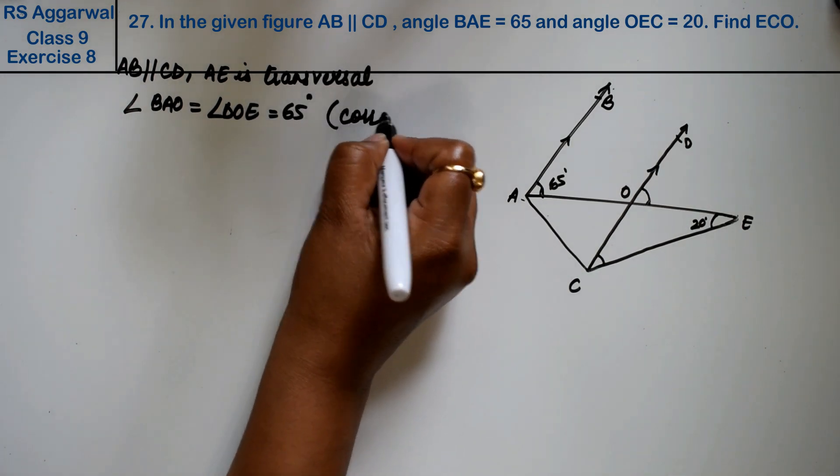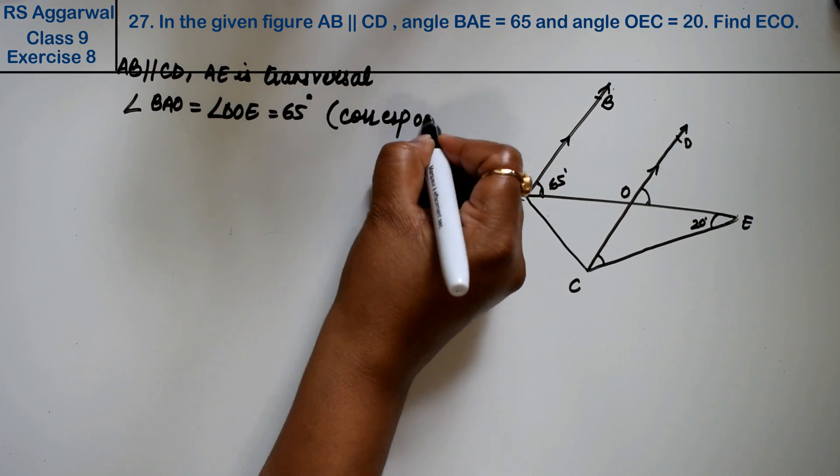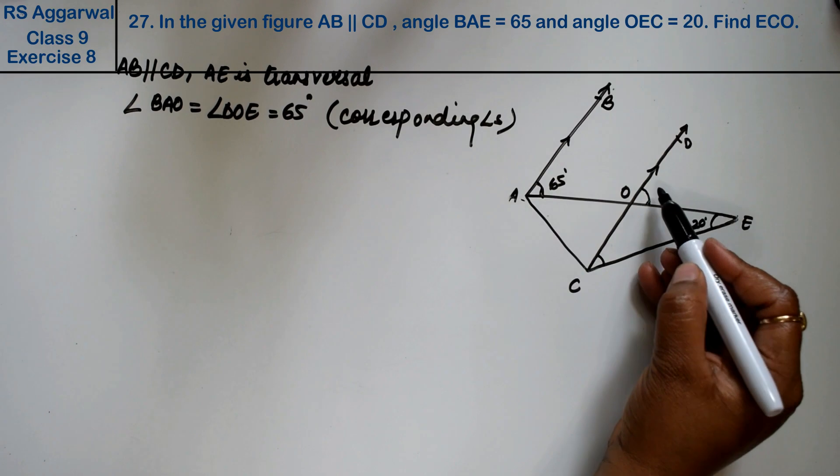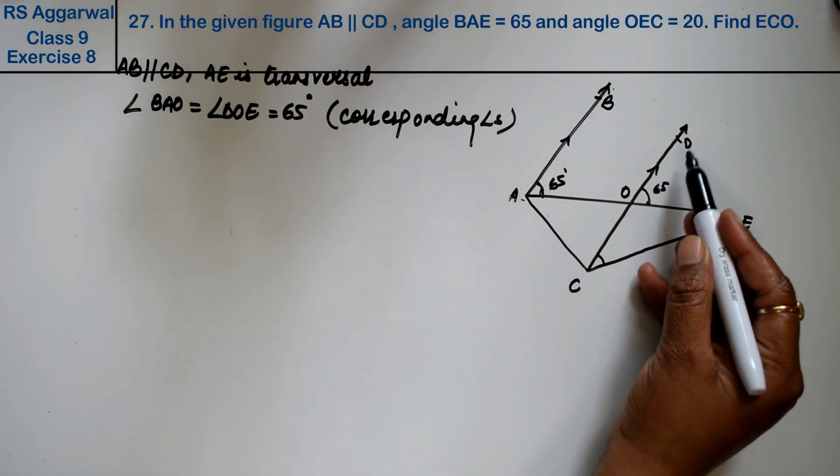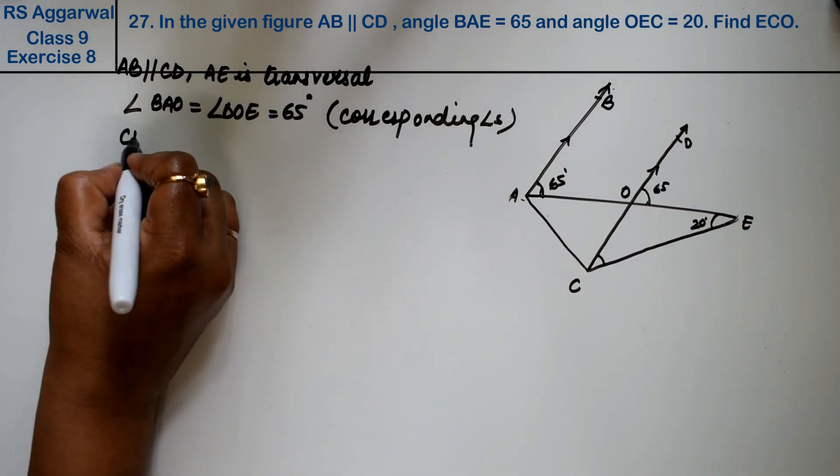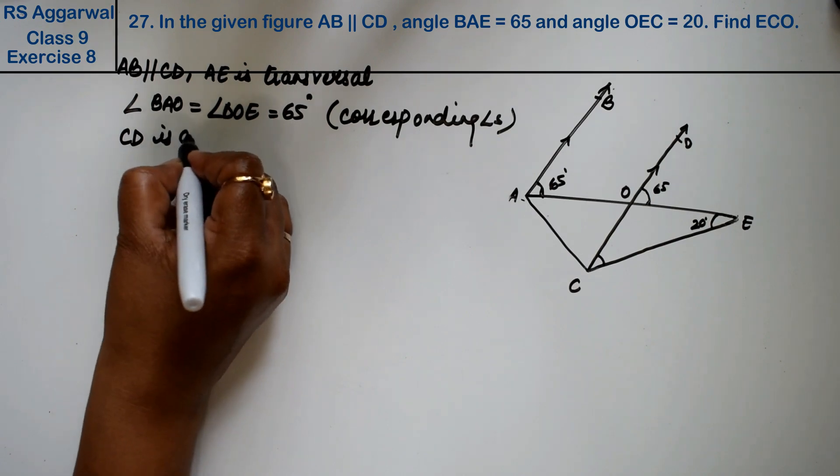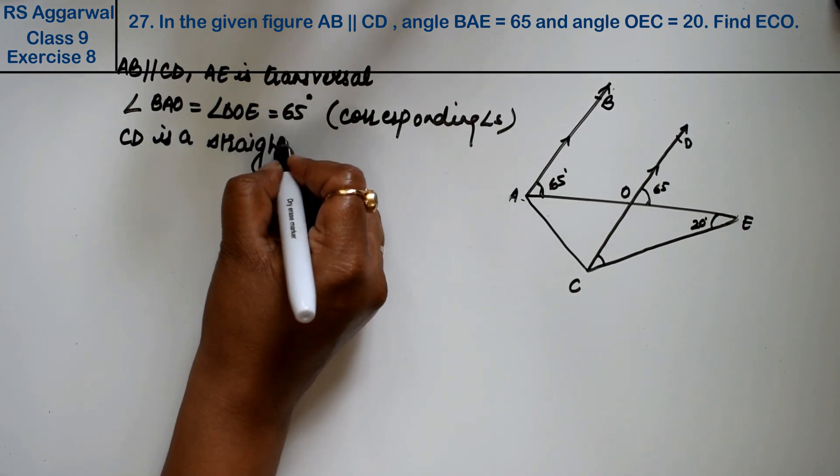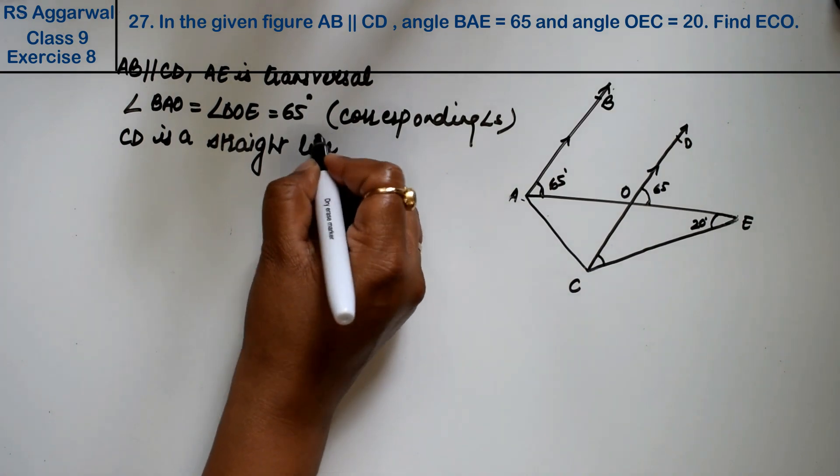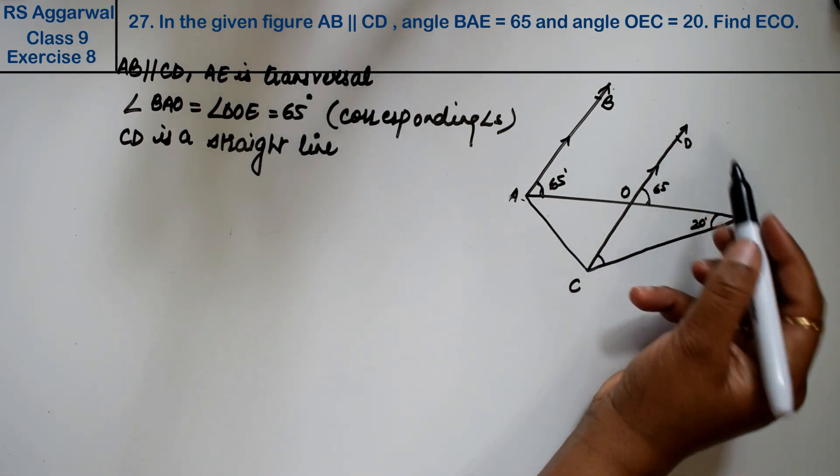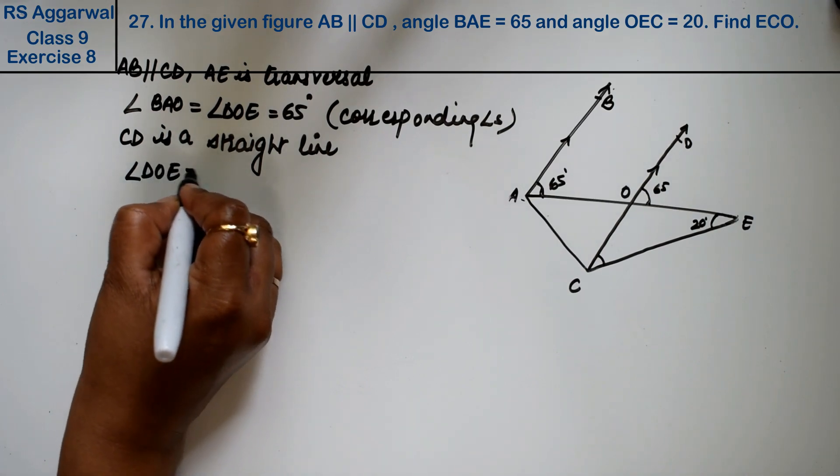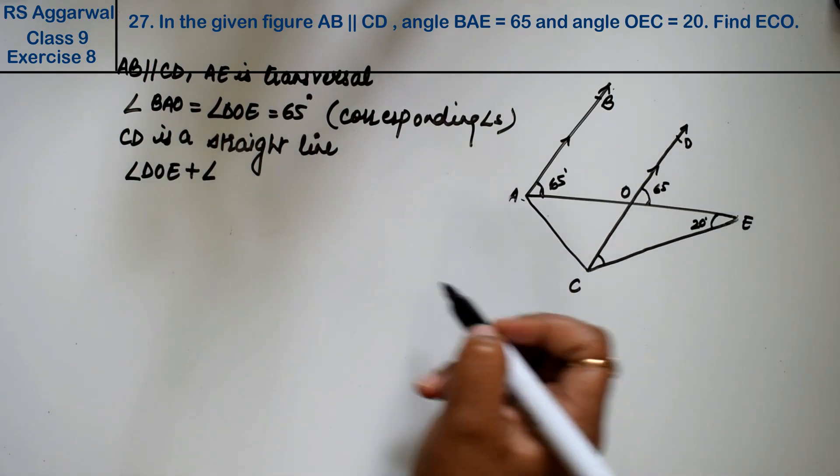These are corresponding angles. Now this 65 has been found. Now we know that CD is a straight line. So angle DOE plus angle EOC equals how much? 180 degrees.